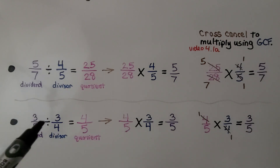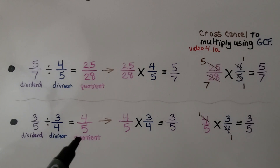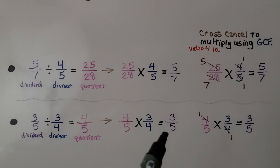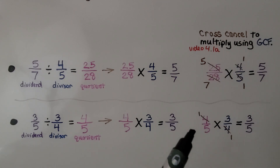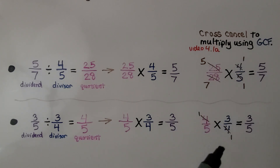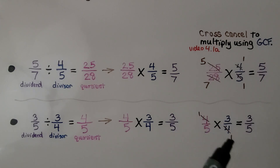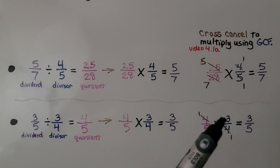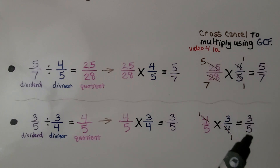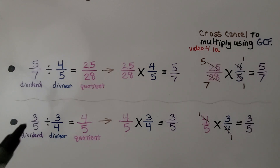For 3 fifths divided by 3 fourths, it's equal to 4 fifths. We can write it as 4 fifths times 3 fourths is equal to 3 fifths. We can use cross-cancellation: 4 and 4 have a 4 in common, so we cancel them as 1s. Then 1 times 3 is 3 and 5 times 1 is 5, giving us 3 fifths, which is the dividend.